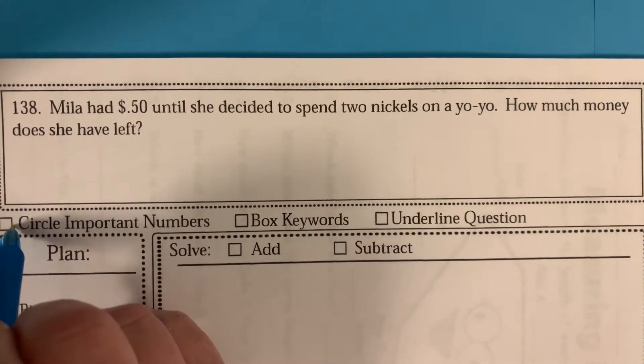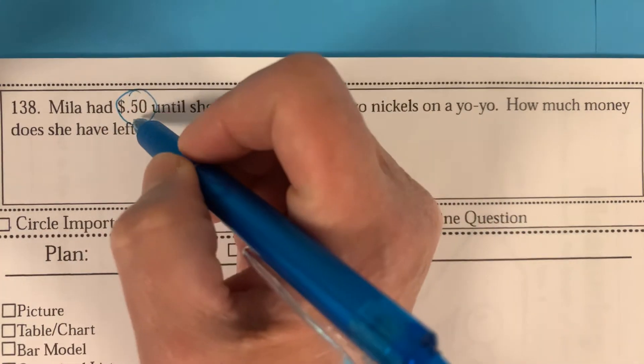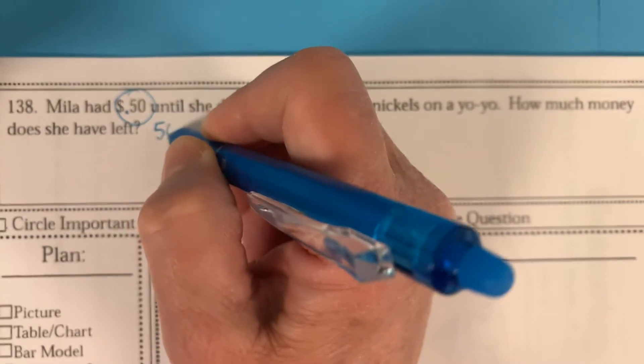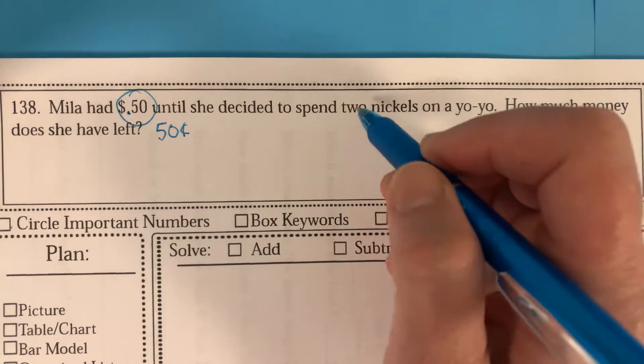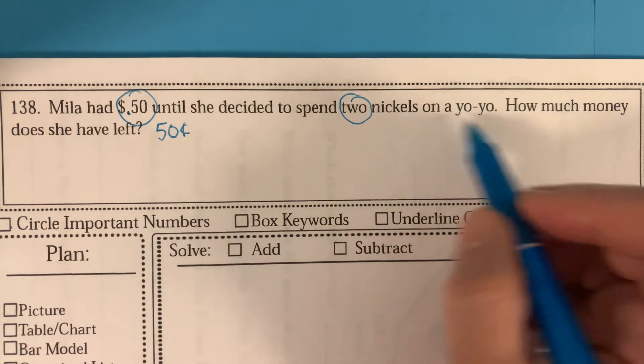First, we're going to circle the important numbers. So 50 cents is important. That's written with a dollar sign and a decimal, but you could also write it like this, 50 cents, until she decided to spend two nickels, so that's another important number, two on a yo-yo.